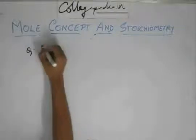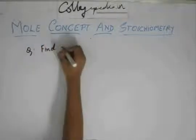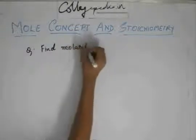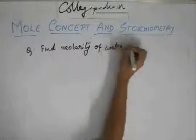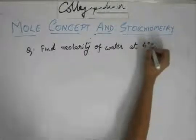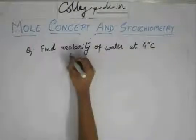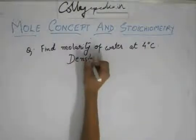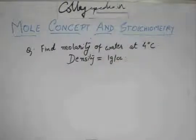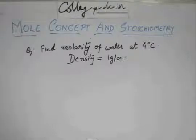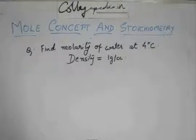The question would be: find the molarity of water at 4 degrees Celsius. Given the density is 1 gram per cc. Now, you might be wondering there is no solution in this — there is just a solvent. So how can you find the molarity of a solution when there is no solute? There is just water.